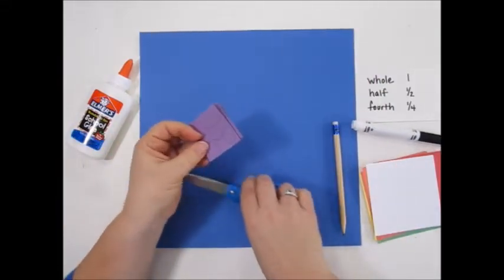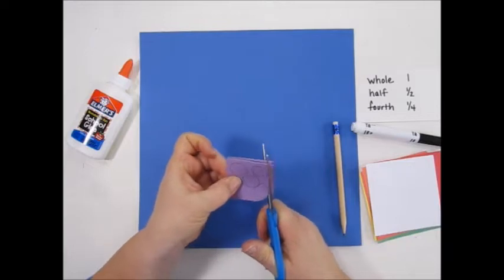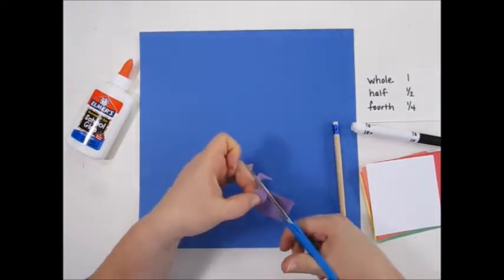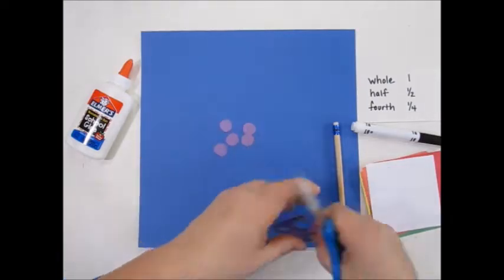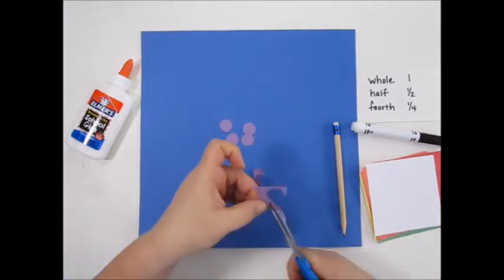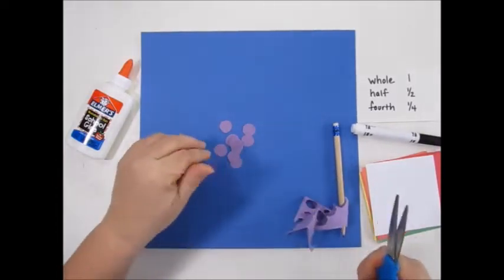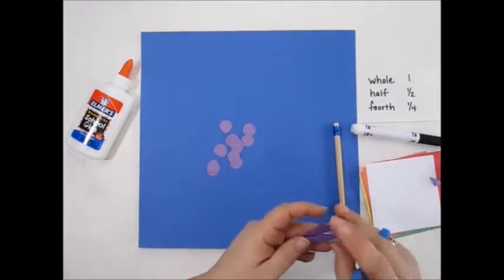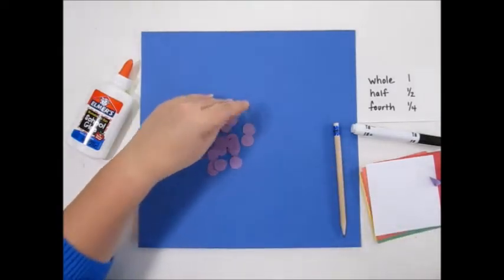I need five circles on my little square. This should give me plenty of grapes to make a cluster of grapes. There's my grapes!